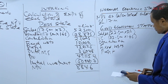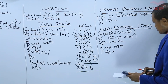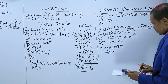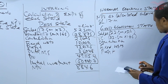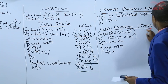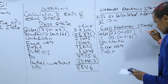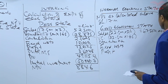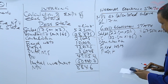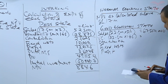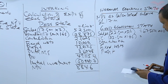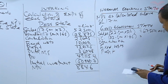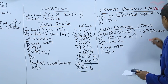22.5 million times 3 shillings = 67,500,000. Variable cost: 22.5 million times 1.65 = 37,125,000. The contribution is 67,500 minus 37,125 = 30,375,000.